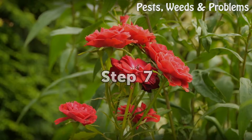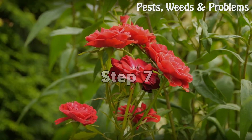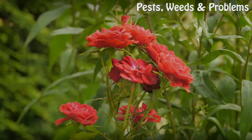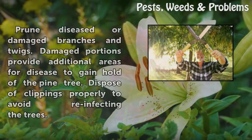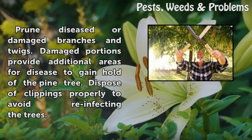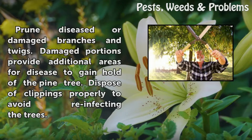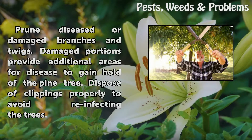Step 7: Prune diseased or damaged branches and twigs. Damaged portions provide additional areas for disease to gain hold of the pine tree. Dispose of clippings properly to avoid reinfecting the trees.